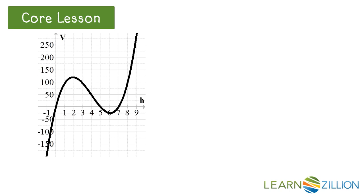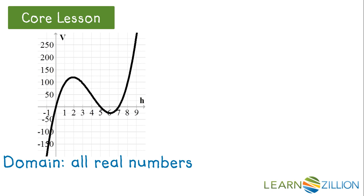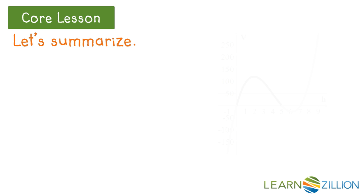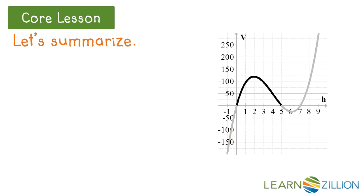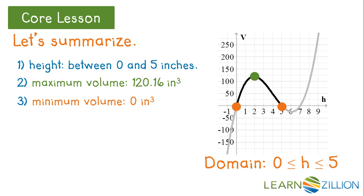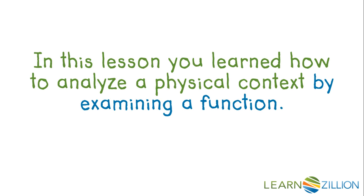So we started with a function that had a domain of all real numbers. After taking a closer look at the context that surrounded it, we were able to restrict the domain to only include numbers between 0 and 5. Let's summarize. With the restricted domain between 0 and 5, the height must be between 0 and 5 inches. The maximum volume occurs at 120.16 inches cubed — this is the relative maximum of our graph. The minimum volume is 0 inches cubed. While the two endpoints do not make the relative minimum of the graph, the relative minimum gave us a negative volume, and volume cannot be negative. In this lesson, you learned how to analyze a physical context by examining a function.